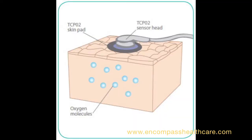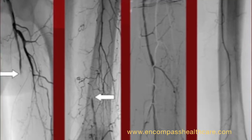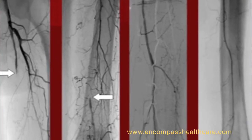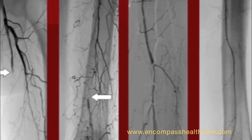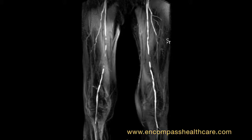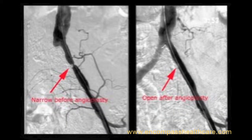If we determine that there's oxygen deficiency at the wound site, we need to explore how to reverse that. That will require a vascular angiogram, possibly angioplasty, in order to get the wound healed.